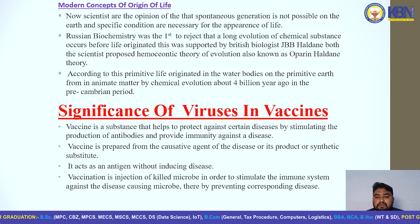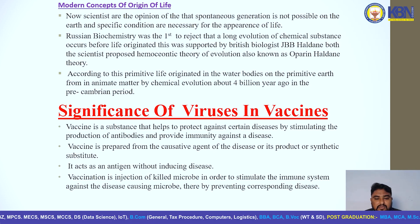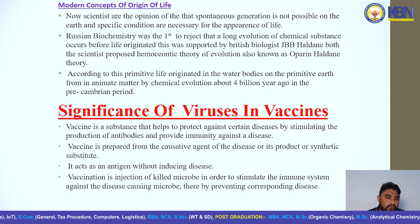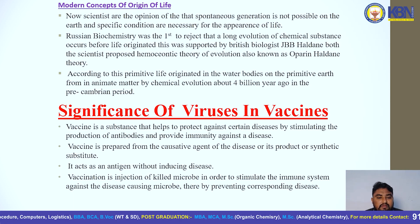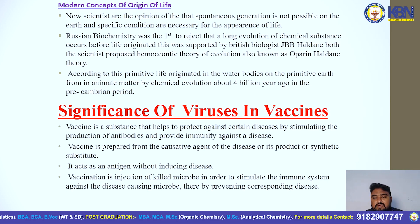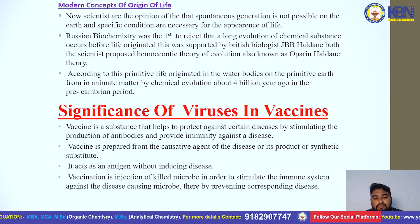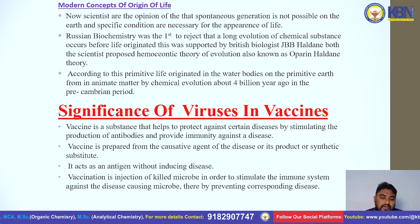The last topic in the first chapter is the significance of viruses in vaccines. A vaccine is a substance that helps protect against certain diseases by stimulating the production of antibodies and providing immunity. Vaccines are prepared from the causative agent of the disease, its products, or a synthetic substitute. It acts as an antigen without inducing the disease.